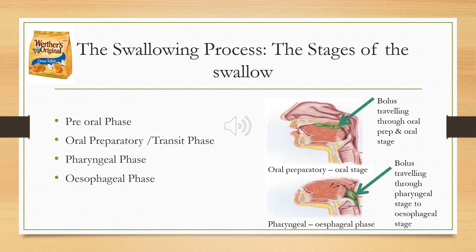Now that we know about the anatomy, we're going to go through the process of the swallow — the different stages and how the different sections of the anatomy interact to complete a safe swallow. I want to use the analogy of a toffee to help you think about each different process. The pre-oral phase is getting access to the food — you've bought a packet of toffees, you have to take them out of the press, reach up, open the press, take the bag down, prise it open, pick out a toffee, unwrap it, and transfer it from the wrapping to your mouth with a steady hand.